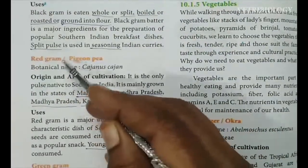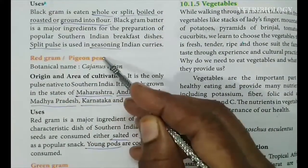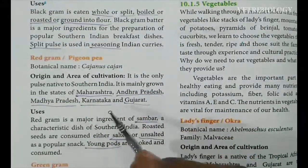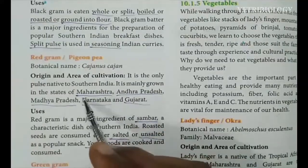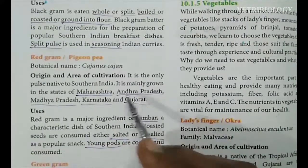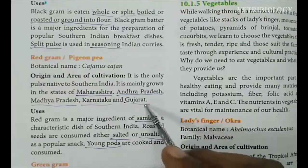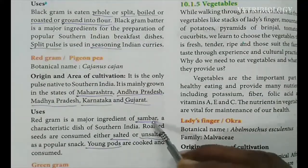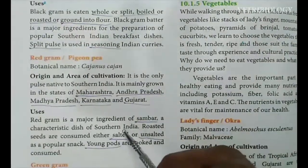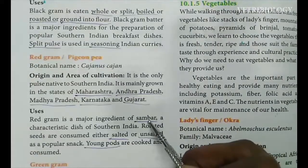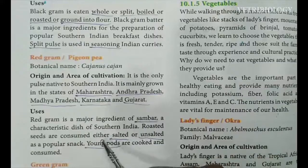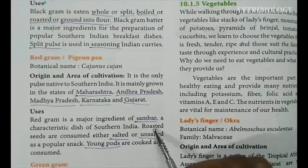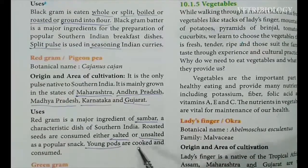Next one is red gram, that is toor dal. In Tamil it is called thuvaramparupu. Its botanical name is Cajanus cajan. It is mainly grown in the states of Maharashtra, Andhra Pradesh, Madhya Pradesh, Karnataka and Gujarat. It is a major ingredient of sambar. Roasted seeds are consumed either salted or unsalted as snacks.